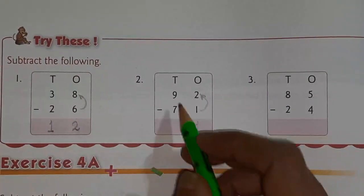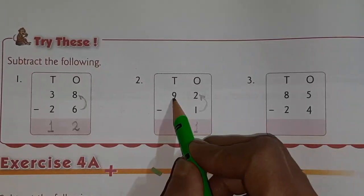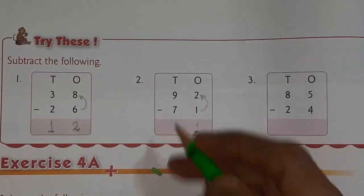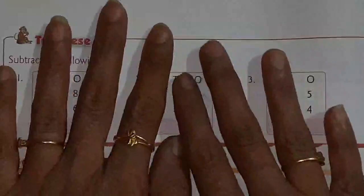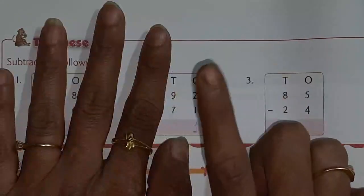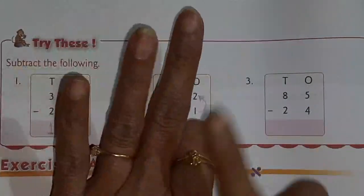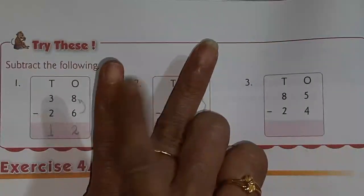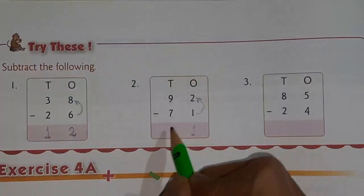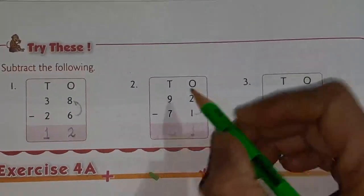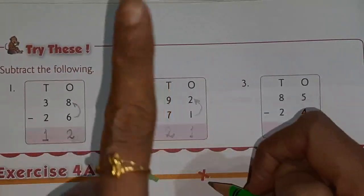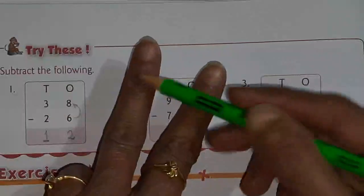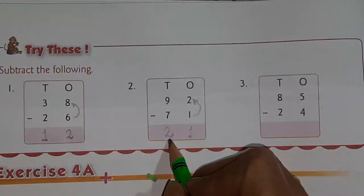Then for the tens column, open 9 fingers and cut 7 — 1, 2, 3, 4, 5, 6, 7 — and 2 are remaining. So our answer is 2. Otherwise after 7 count 8, 9 — so that is also 2. So you can write 2 here.